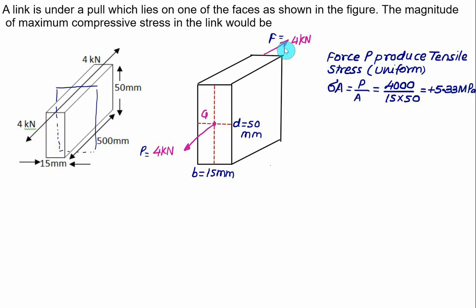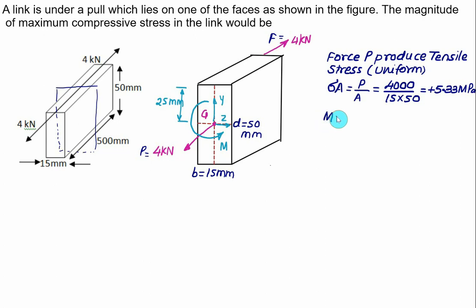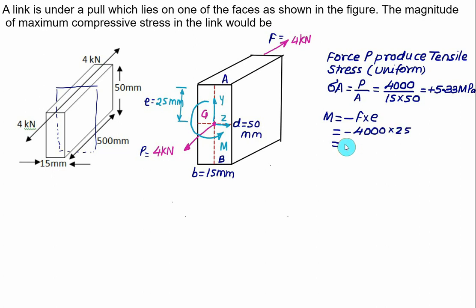The force above point G creates a clockwise moment, so on the cut face an anti-clockwise (hogging) bending moment acts. This moment M = −F × e = −4000 × 25 = −100 × 10³ N·mm, where eccentricity e = D/2 = 25 mm. Hogging is taken as negative.